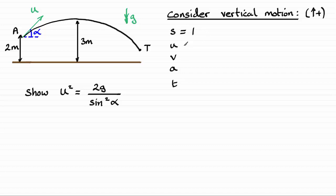U, the initial vertical component of velocity, is going to be the component up here. Which, because it doesn't contain this angle alpha, is u sin alpha. So, u sin alpha for that one.